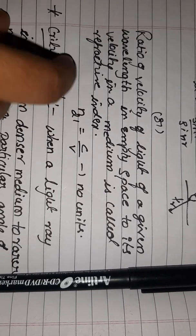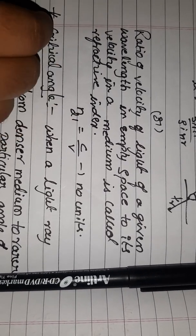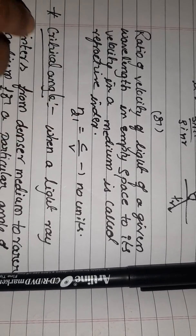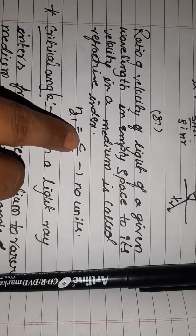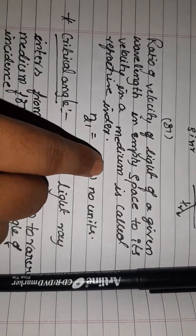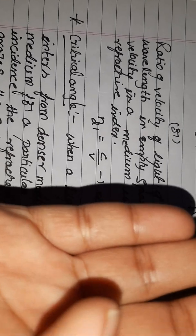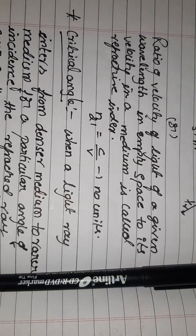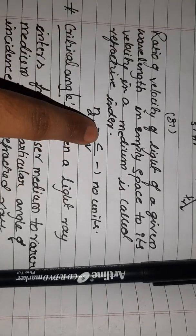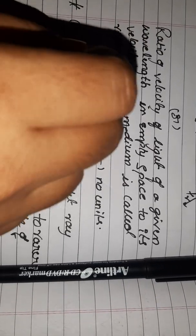A particular medium has a refractive index. Vacuum has a light speed or velocity. Within a medium, light has a different speed. So we define the refractive index based on this difference in speeds.